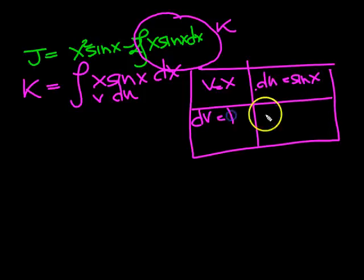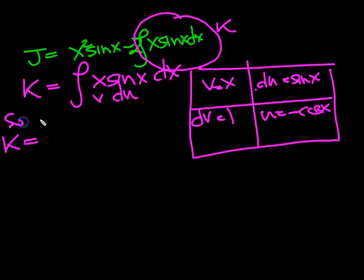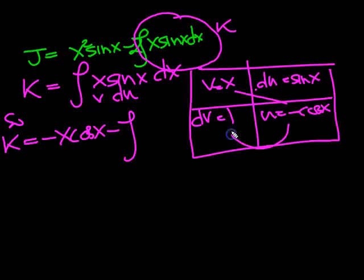So du v will equal 1, and u will equal minus cosine x. So k is equal to then, u v, that times that, which is minus x cos x, minus the integral of u du v. Minus is there, so that'll make it a plus. 1 times cos x is just cos x dx.